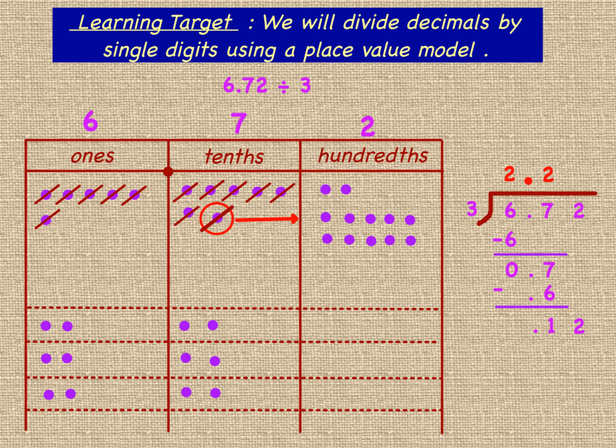Now we can distribute those 12 hundredths into our 3 groups, and we will do that in the same way that we did the ones and the tenths. We're able to get 4 hundredths into each group, represented by 4 in the hundredths column. We were able to distribute 12 of them with 0 left. So our final result when we divide 6.72 into 3 groups will be 2.24.